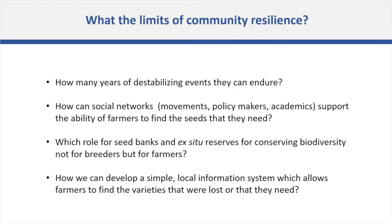There are broad research questions we still need to address: how many years of destabilizing events can these communities endure? How can social networks — including movements, policymakers, and academics — support farmers' ability to find the seeds they need? And what role should seed banks play in conserving biodiversity not only for breeders' needs but also for farmers' needs? How can we develop simple local information systems to allow farmers to find the varieties they need?